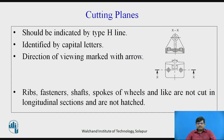When you have ribs, fasteners, shafts, or spokes of wheels, these parts are not cut in the longitudinal direction and no section is shown for them. Sections are used to show inner hidden details, and if you cut these components longitudinally, no details can be seen. To avoid this and to avoid time consumption, we do not hatch these standard parts.